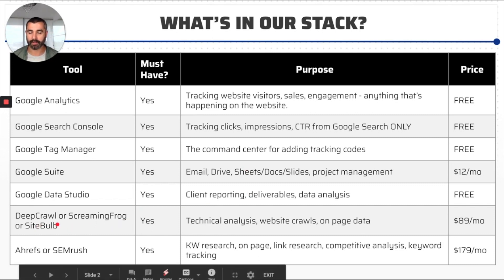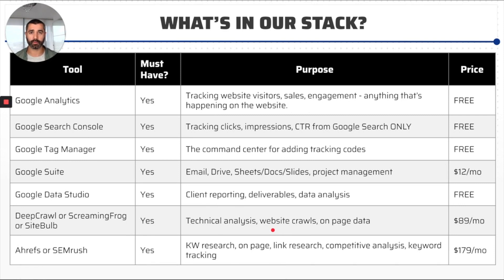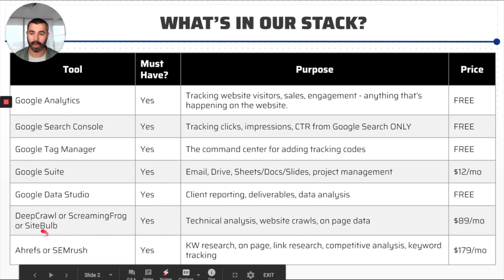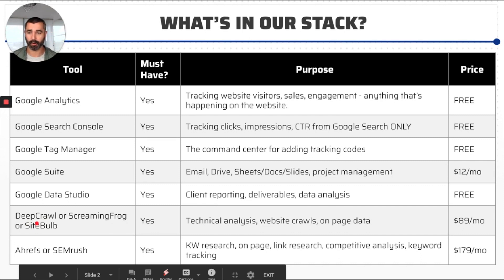The next tool is basically our technical analysis or website crawling tool. These tools crawl or spider your website and pull back a bunch of the code, organizing it in a table format. We use Deep Crawl, which costs about $89 a month. You can also use Screaming Frog, which is cheaper, or Sightbulb, which is a bit more robust for technical SEO. I use Deep Crawl because I'm comfortable with it, we have a good relationship with them, and they have a great API that we use for some of our other tools.